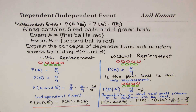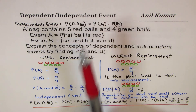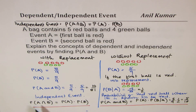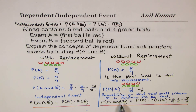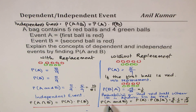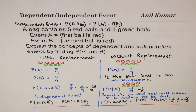I hope with this video the concept is absolutely clear. In independent events, the probability of both events occurring is the product of their individual probabilities. For a dependent event, it is the product of the probability of A times the probability of B when A has occurred. That is how we distinguish between and understand dependent and independent events.